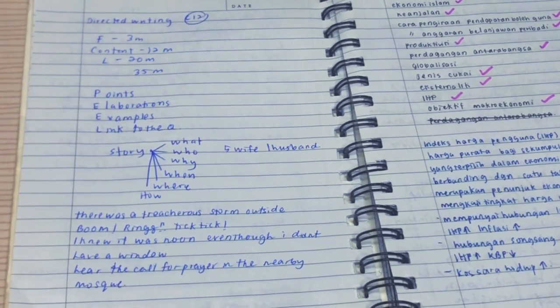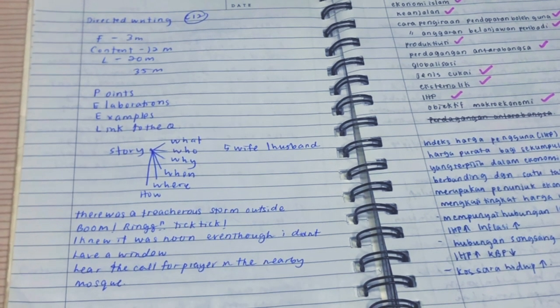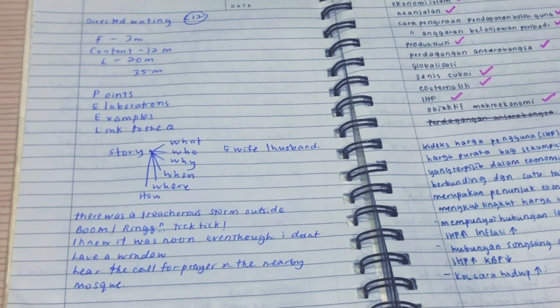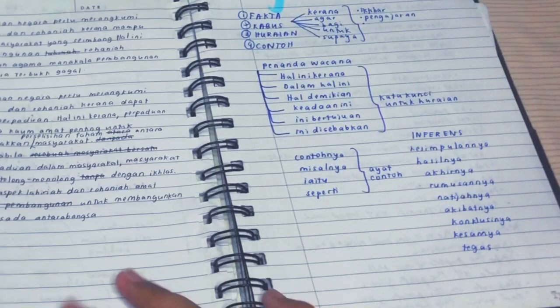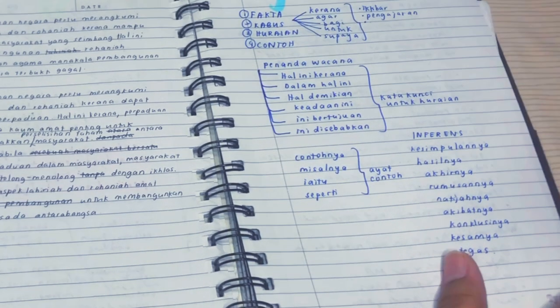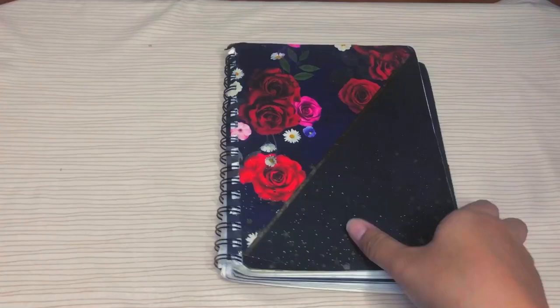Basically, mostly my English notes are focused on essays, because for literature and whatnot, I just do exercises. For BM, I write notes that the teacher gives that I feel I'm weak at, and also discourse markers to start essays. I forgot to talk about Maths. So for Maths, I just do exercises, and for the notes I just print the formulas out.